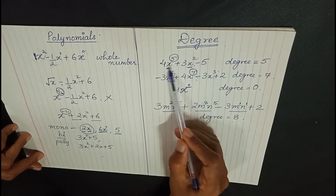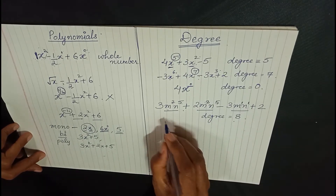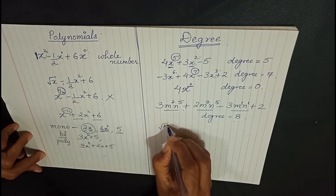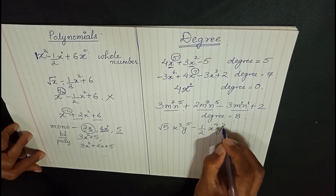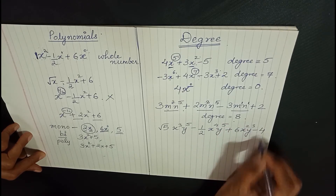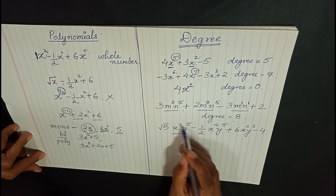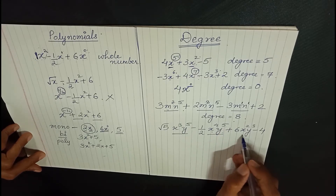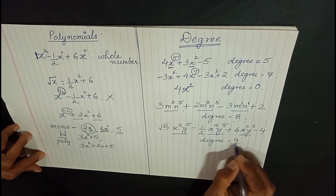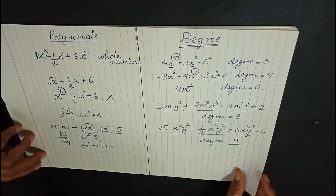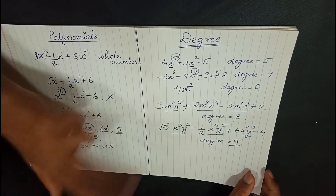When a single variable is present you can directly spot the highest degree, but when more than one variable is present you must add the powers in each term and find the highest sum. For example, root 5 x cubed y raised to 5 minus half x raised to 4 y raised to 5 plus 6x squared y cubed minus 4: adding powers gives 3+5=8, 4+5=9, and 2+3=5. The biggest is 9, so the degree of this polynomial is 9.